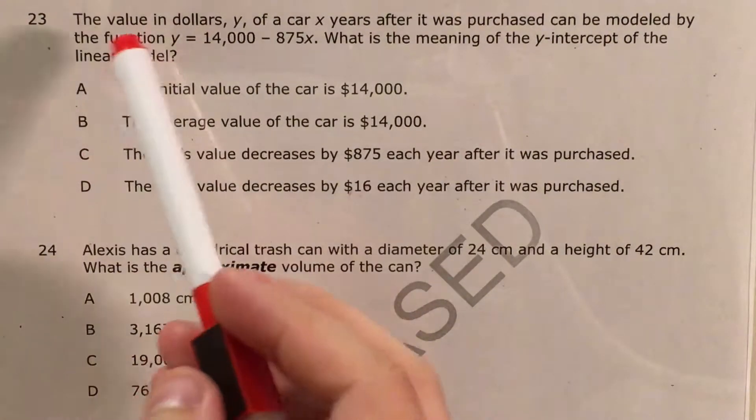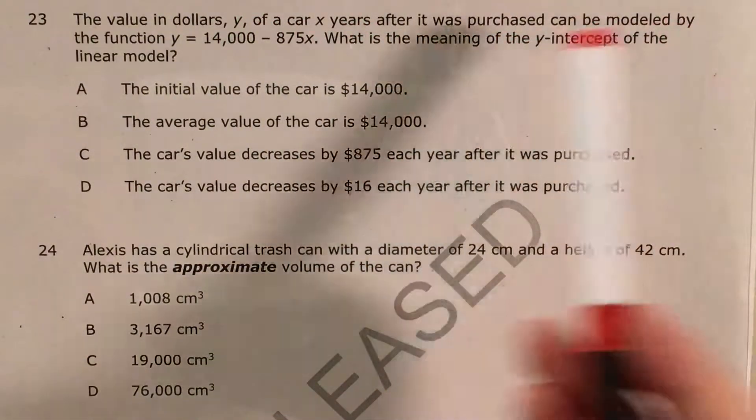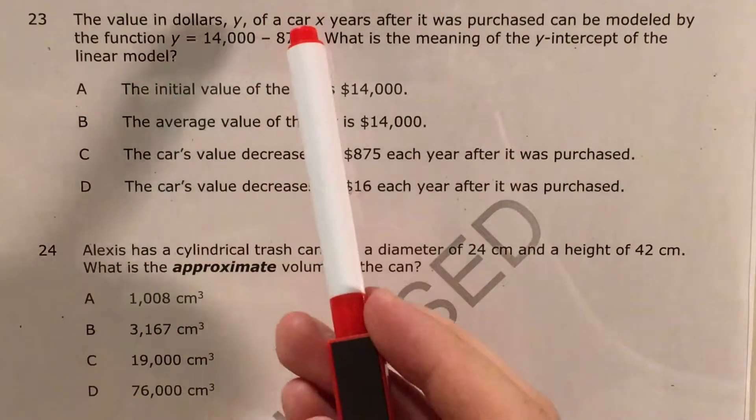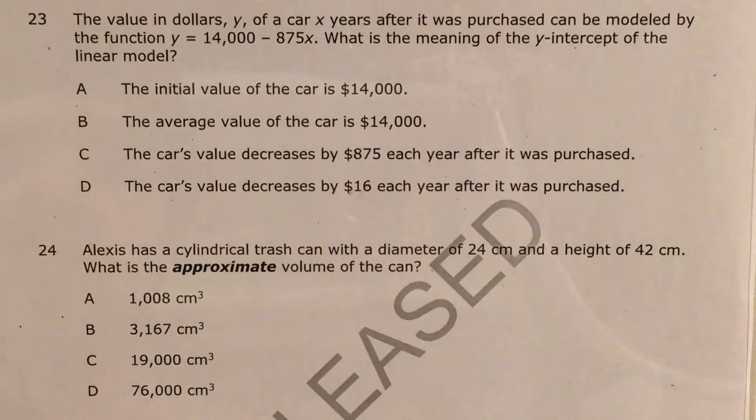The question tells us that the value in dollars, y, of a car x years after it was purchased can be modeled by the function y equals 14,000 minus 875x, and we're supposed to find the meaning of the y-intercept of this linear model.